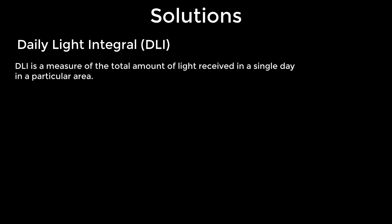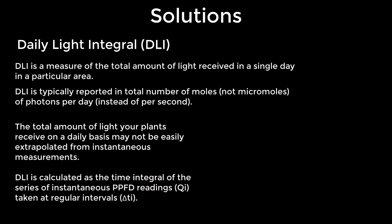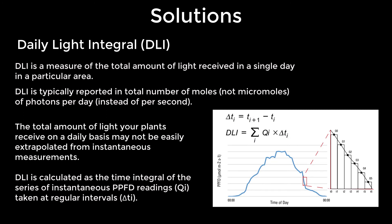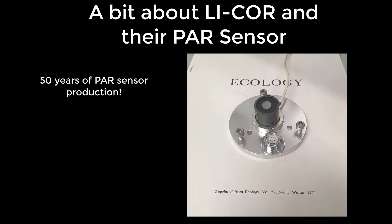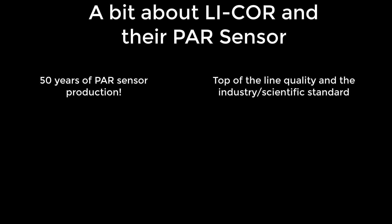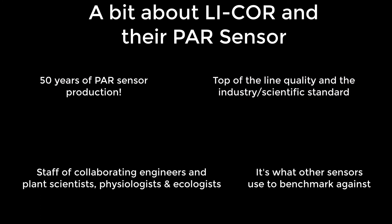Something we didn't touch on much yet is the daily light integral — the total amount of light received in a single day in a particular area, measured as moles of photons per day. To get this, an instantaneous measurement isn't sufficient because light conditions change throughout the day, especially in greenhouses. You record light intensity at set timed intervals and then integrate under that curve to get a final DLI value, using a device like the LI-1500 which has a program built in to calculate this for you. LI-COR has been manufacturing PAR sensors for almost 50 years — they're top-of-the-line quality and considered the industry standard, often used as the benchmark by other sensor manufacturers.